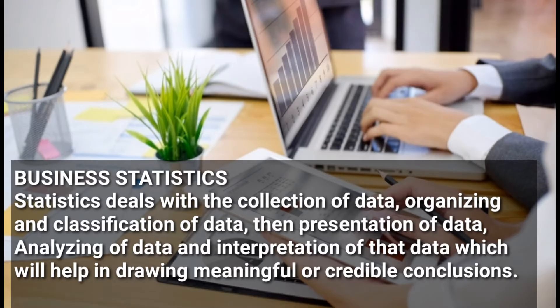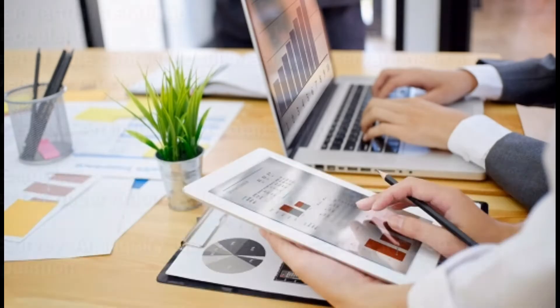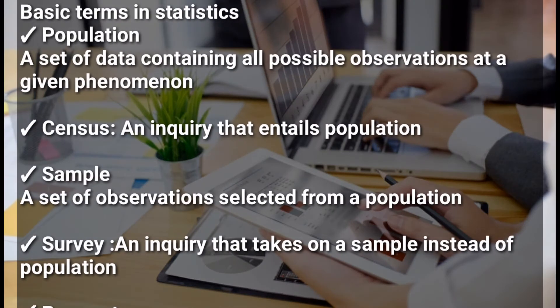Now let's look at the basic terms in statistics. We shall start with population. Population refers to a set of data containing all possible observations of a given phenomenon. A set of all observations is what we call a population — for example, the number of people in the whole country or the total number of elements that you have.